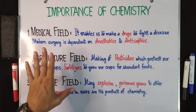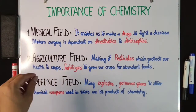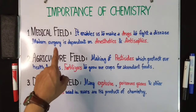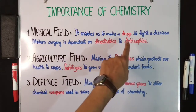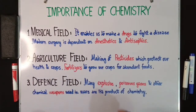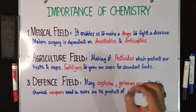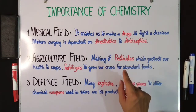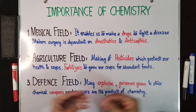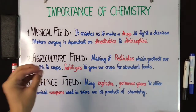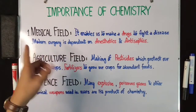First, I will talk about the importance of chemistry in the medical field. It is written: 'It enables us to make our drugs to fight our diseases.' Whatever disease arises in the human body or in an animal's body, drugs — meaning medicines — are made because of chemistry. Chemicals are combined to make drugs so that we can fight those diseases.